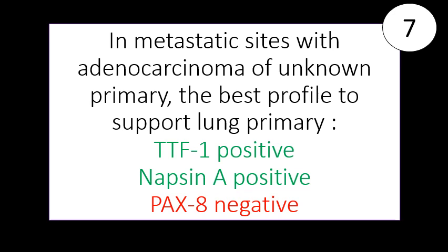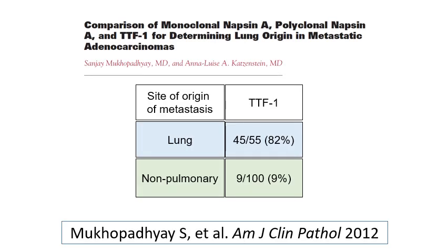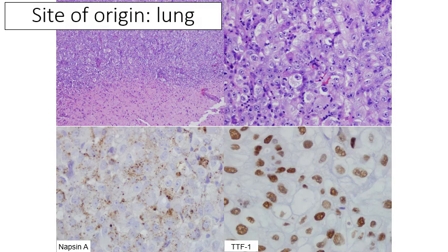In that situation, the best profile to support a lung primary is positivity for TTF1 and napsin, combined with negative staining for PAX8. This not only gives you two stains that should be positive in lung adenocarcinomas, it also essentially excludes a thyroid primary. In our 2012 paper from Syracuse, 82% of metastatic adenocarcinomas of lung origin stained with TTF1, matching what we know from primary lung adenocarcinomas. However, all nine of the non-pulmonary TTF1-positive cases were thyroid cancers, which is why PAX8 is needed.